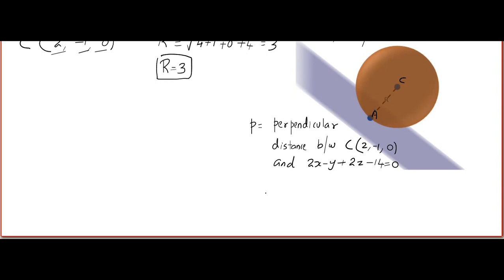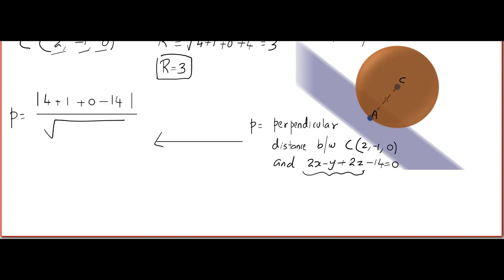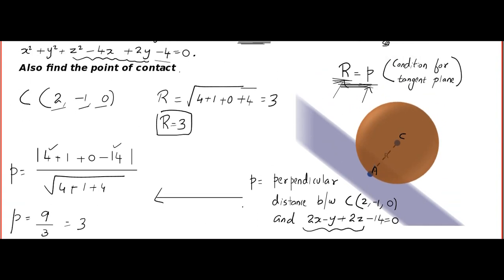Now we find the perpendicular distance p from the center to the plane. P = |numerator| / |normal|. Plugging in the center: |2·2 + 1 + 0 − 14| / √(4 + 1 + 4) = |4 + 1 − 14| / 3 = |−9| / 3 = 9/3 = 3. So R = P = 3, which proves the plane touches the sphere.